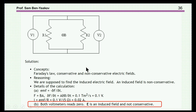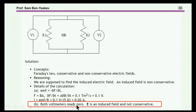Even today, this is a source of confusion. Here's an example of a homework exercise from one university — I won't say which one. They pose the same question to students: given the circuit with two resistors and flux, what are V1 and V2? They go through this calculation and come up with the answer that both voltmeters read zero. That's simply nonsense.